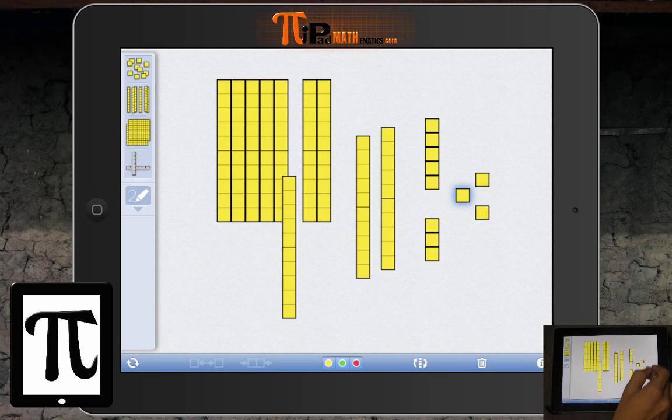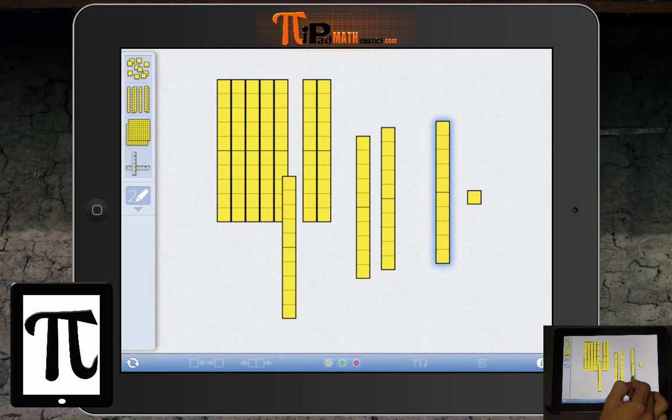I can draw a little circle around here that highlights all of them, and if I want to compose a ten, we have this option down here at the bottom that now takes ten of those that we just highlighted and made it into a long.